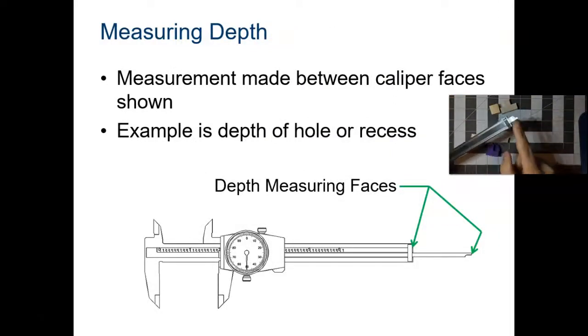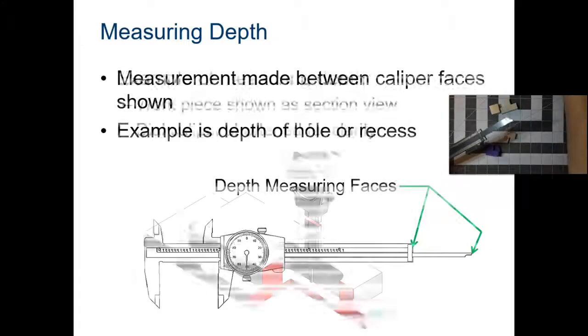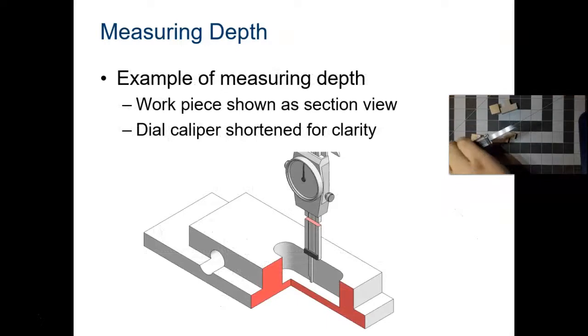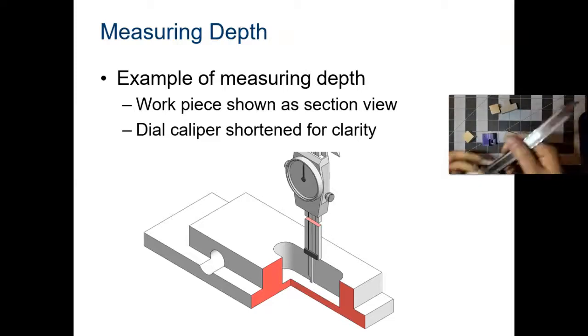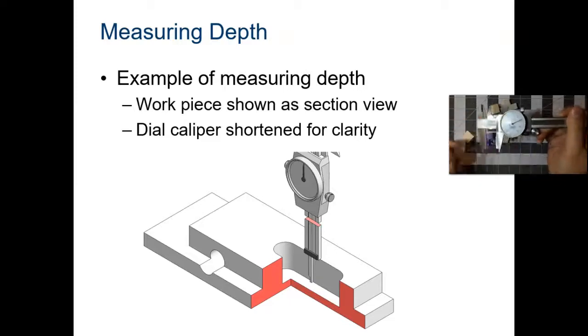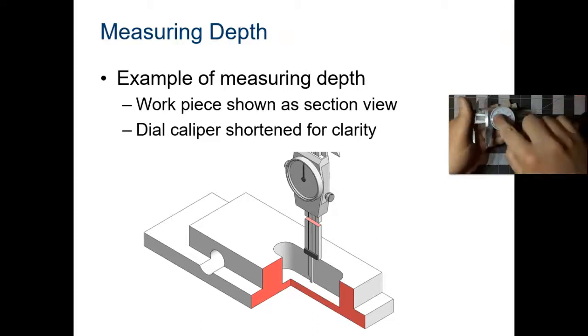If you wanted to measure depth, the end of the dial caliper comes out. You see that? So if there was a hole in a part that didn't go all the way through but stopped, like halfway through or some distance through, you would be able to use that end. That comes out to measure, and you would just read the reading on the caliper face, the dial.